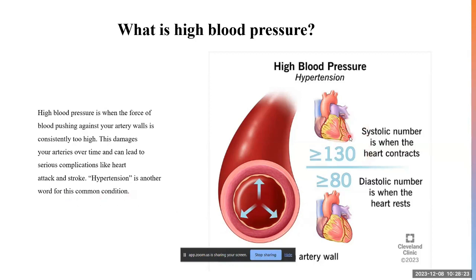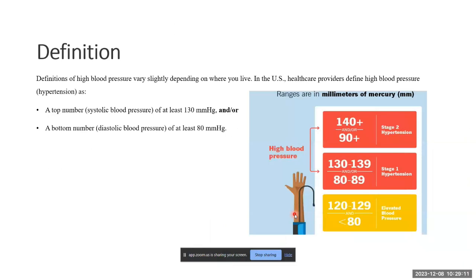When do we call it hypertension? A systolic of 120 to 129 is slightly elevated but okay. When it touches the 130 threshold, we label that person as hypertensive. The threshold to label a person as hypertensive is 130 for systolic and 80 for diastolic. Some books write it as above 90 for diastolic, while others say 80 and above.